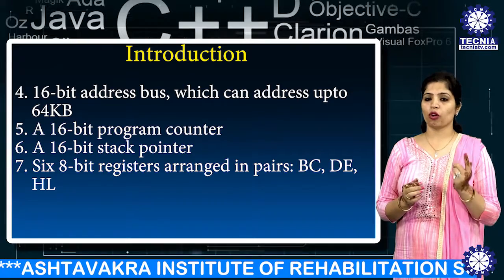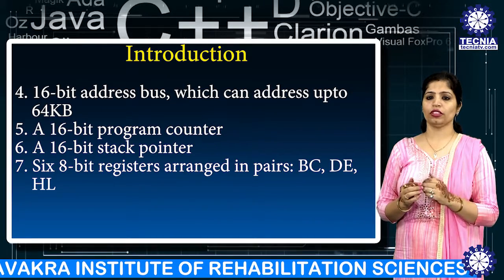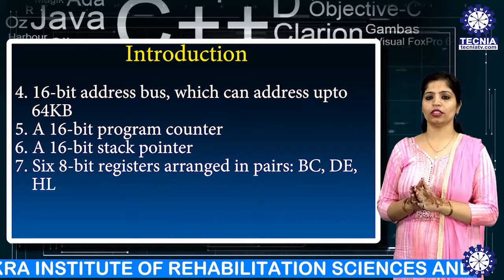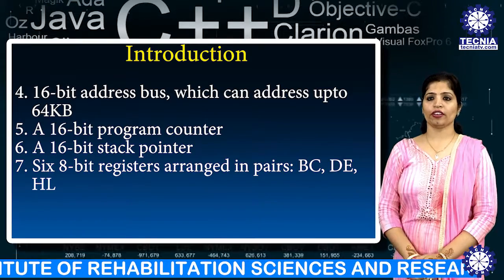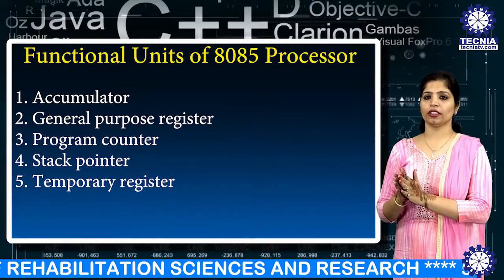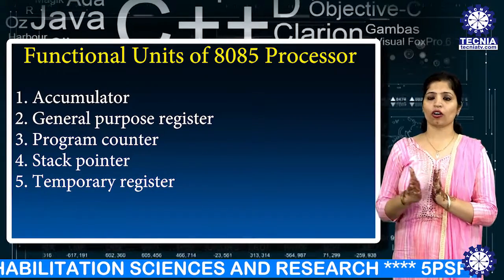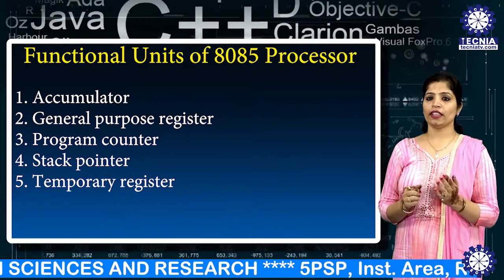The 8085 microprocessor is used in washing machines, microwave ovens, mobile phones, etc. Regarding the functional units, it has the following units: the first one is the accumulator.